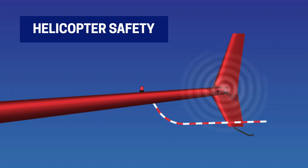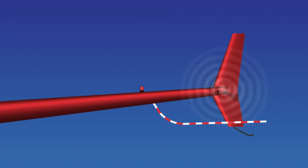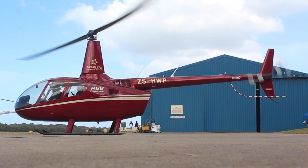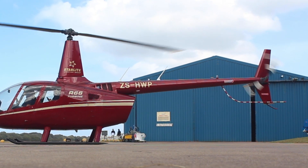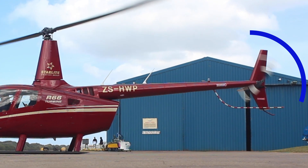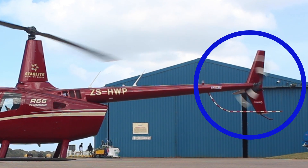A helicopter's tail rotor spins at very high speeds in order to get the thrust it needs. These speeds can be so excessive that it may appear invisible to the human eye. For most small to medium sized helicopters, the tail rotor's height is roughly eye level. For these reasons, the tail rotor poses a massive danger to humans in close proximity.